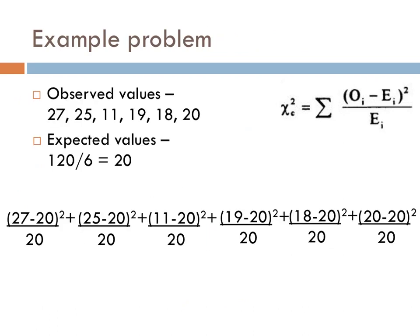With our observed and expected values defined, all you need to do is plug each of the different numbers into the equation separately. Again, x-squared is the chi-squared number that you're trying to solve, and sigma is the sum. So you're going to take the sum of all of the different six observed values minus the expected values, square that, and then divide it by your expected value.